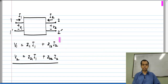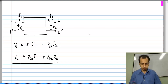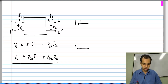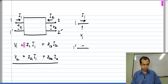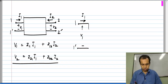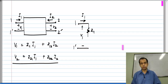Now we consider the Z-parameter representation of the two-port, which gives V1 and V2 as linear combinations of I1 and I2. Let us say this is port 1 with current I1 flowing into it and V1 across it. V1 is the sum of two quantities, so there should be two voltage drops in series. The first is z11·I1 — a voltage drop proportional to the current flowing through the port — which corresponds to a resistance of value z11.